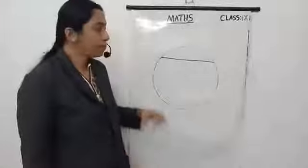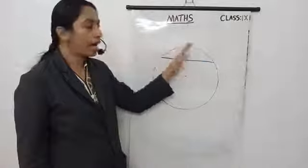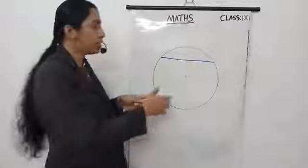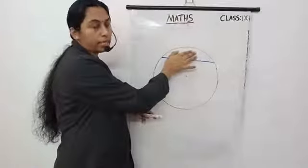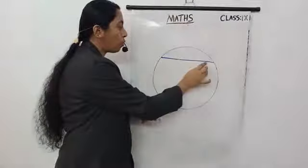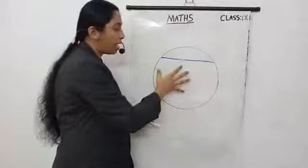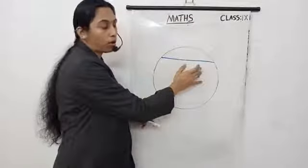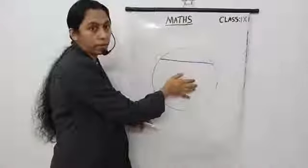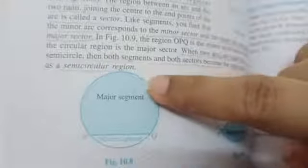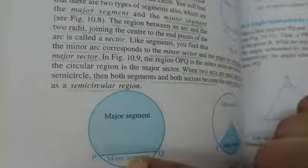Next is segment. The region between the chord and either of its arcs is known as a segment. That means a chord and one of the arcs — the region between them is known as a segment. In your textbook, page 170, figure 10.8, there are two types of segment: major segment and minor segment. The chord and the longer arc — the portion between them is the major segment. The region between the shorter arc and the chord is the minor segment.